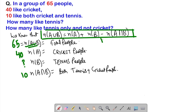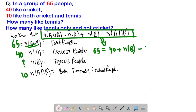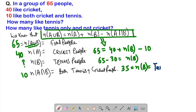These values are from the given question. Now, putting all these values into the formula: n(A∪B) on the LHS will be 65, n(A) on the RHS will be 40, n(B) is unknown, and n(A∩B) is 10. Solving this equation, we get n(B) = 35. So 35 is the number of people whose choice is tennis in the group of 65 people.